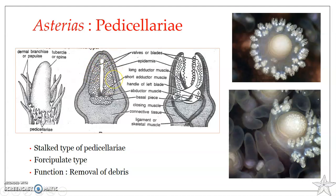Such a kind of pedicillariae with three calcareous plates — the two valves plus the basilar piece — is known as the fossipulate type. This is the kind of pedicillariae found in Asterias rubens. So the stalked fossipulate type of pedicillariae are found in Asterias rubens on both the oral as well as the aboral surface.